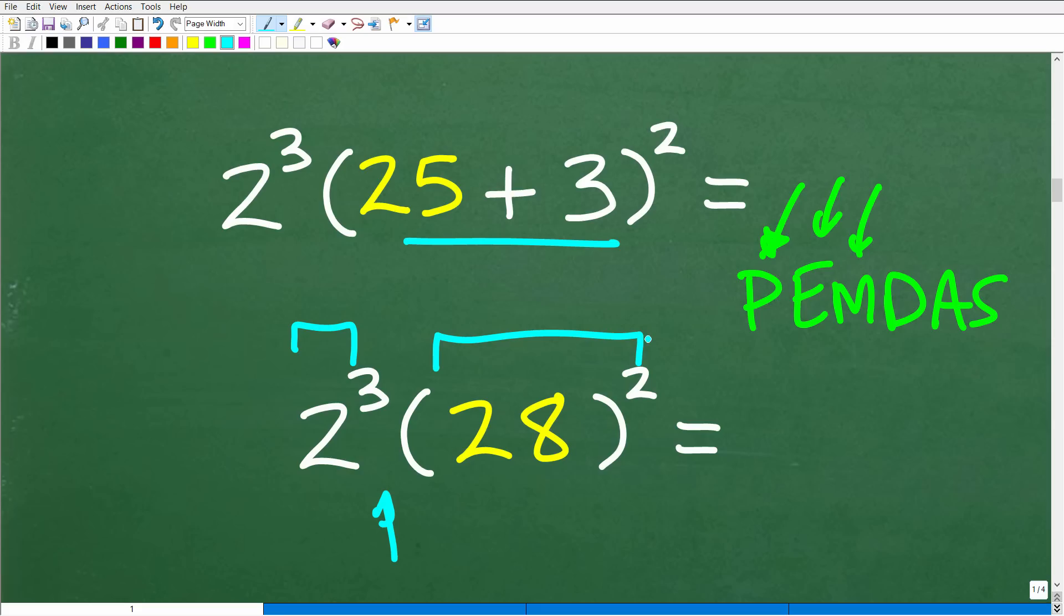Okay. So at this point of the problem, we're going to have to take care of these powers. So two to the third and 28 squared. Now, of course, this is going to be a little bit of work in terms of basic multiplication, but certainly this is not beyond your capacity. I am sure of that.